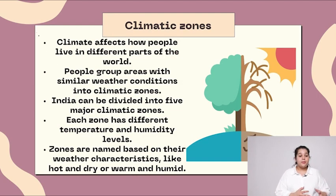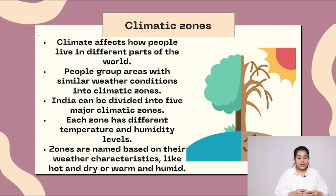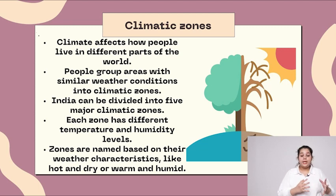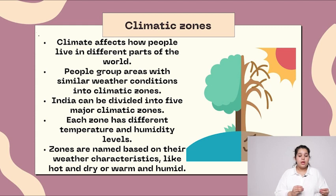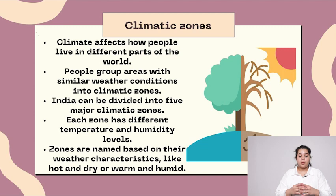Climatic zones. Climate affects how people live in different parts of the world. People group areas with similar weather conditions into climatic zones. India can be divided into five major climatic zones. Each zone has different temperature and humidity levels. Zones are named based on their weather characteristics like hot and dry or warm and humid.